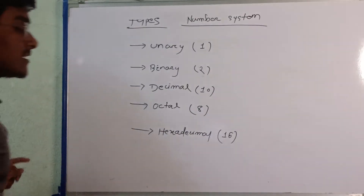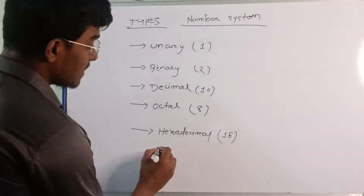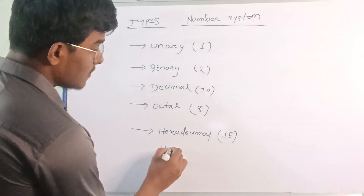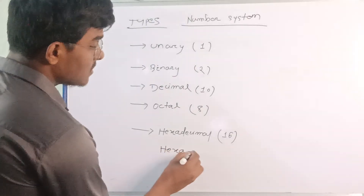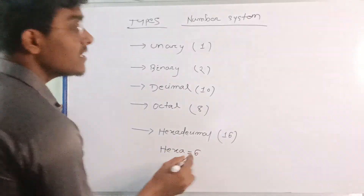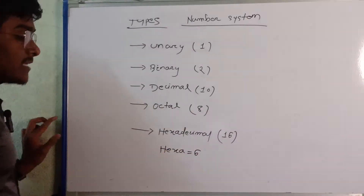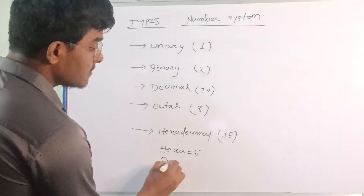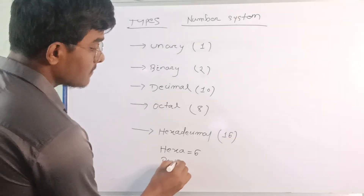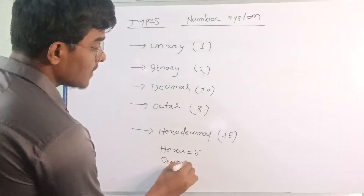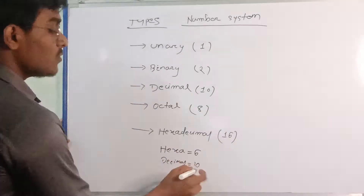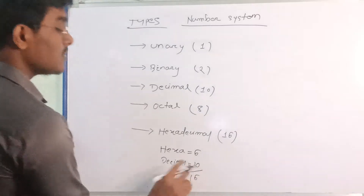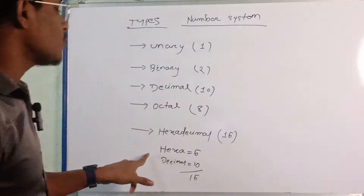Why is hexadecimal 16? "Hexa" means 6, and "decimal" means 10 — so 10 plus 6 equals 16. So the base of hexadecimal is 16.